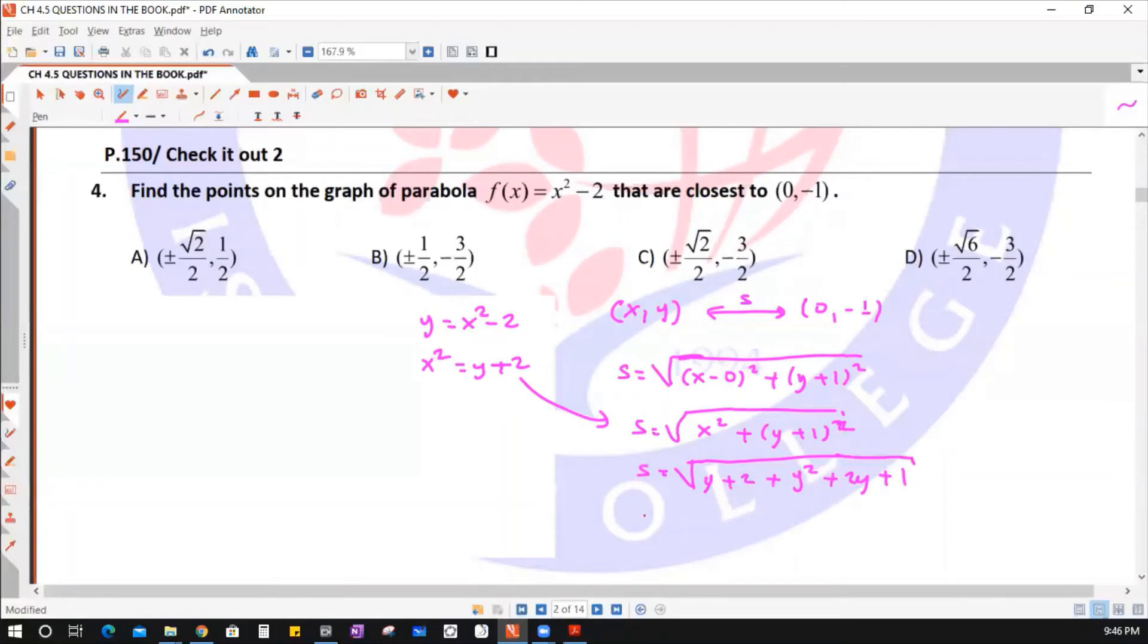And then in the final step, just combine the like terms: y² + 3y + 3. That's it. This is the function in one variable.